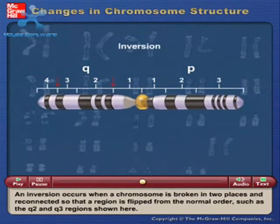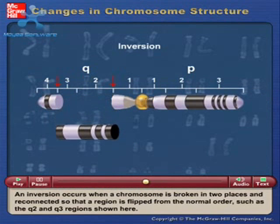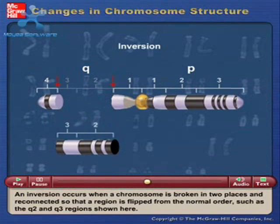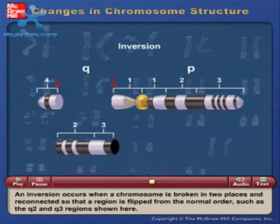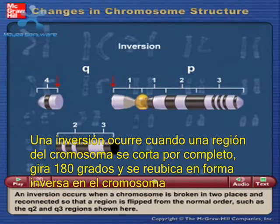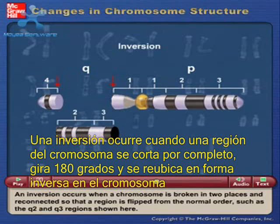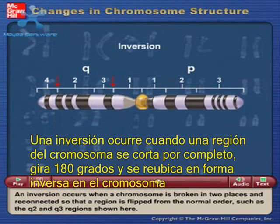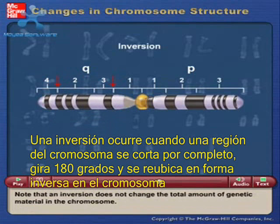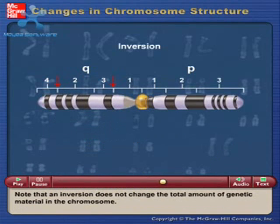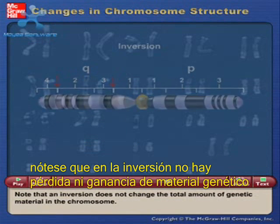An inversion occurs when a chromosome is broken in two places and reconnected so that a region is flipped from the normal order, such as the Q2 and Q3 regions, shown here. Note that an inversion does not change the total amount of genetic material in the chromosome.